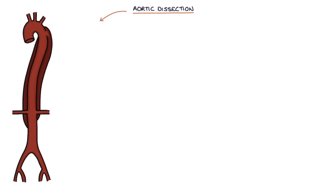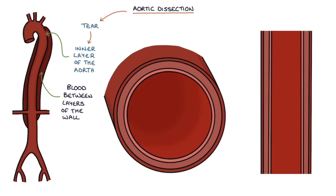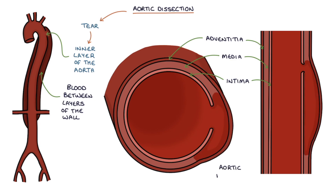Aortic dissection refers to when a break or a tear forms on the inner layer of the aorta, allowing blood to flow between the layers of the wall of the aorta. There are three layers to the wall of the aorta: the intima, media, and adventitia. With aortic dissection, blood enters between the intima and the media layers, forming a false aneurysm within the wall of the aorta. The term intramural refers to within the walls of the blood vessel.